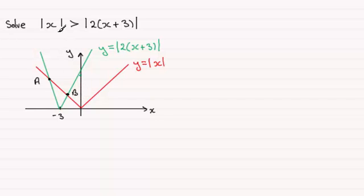What we're looking for is essentially where the red graph is greater than the green graph. In other words where the y values for the red graph are above the y values for the green graph. And that's going to be in this section here between a and b. So what we need to do is find the x value at a and the x value at b.